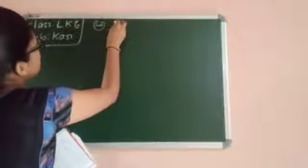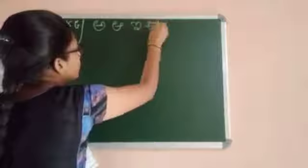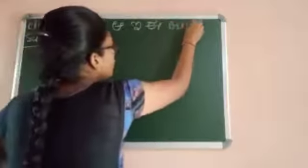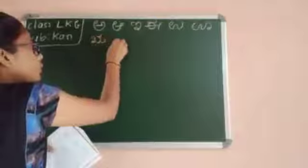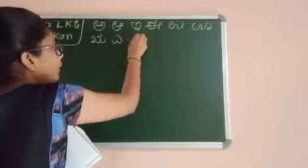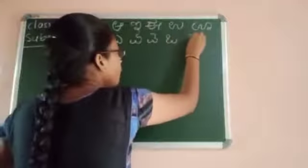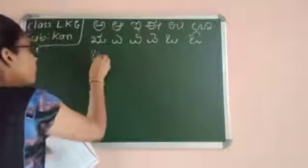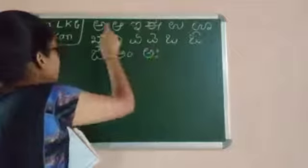First I will write vowels. So everyone: A, E, E, U, U, RU, A, A, I, O, O, O, O, AHA.